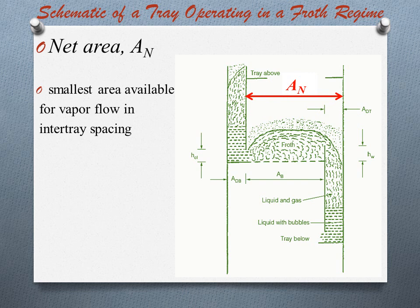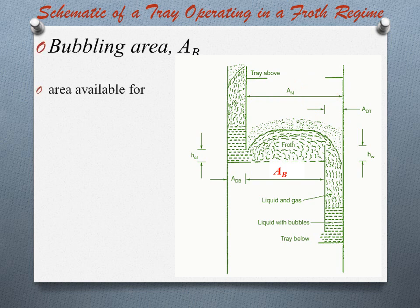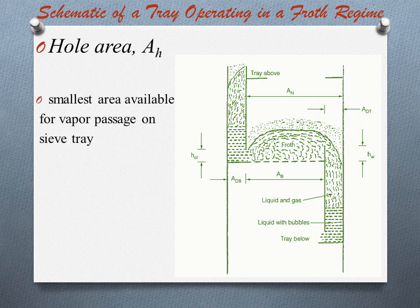Next is bubbling area, which is denoted by AB, also called active area. It is defined as the total tower cross-sectional area minus the sum of downcomer top area ADT, downcomer seal area, and any other non-perforated areas on the tray. The bubbling area represents the area available for vapour flow just above the tray floor.